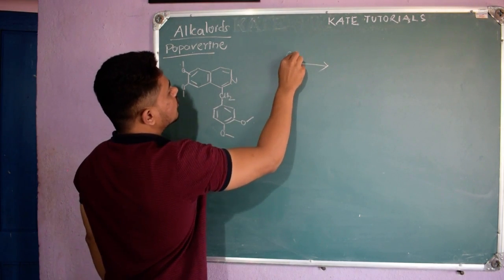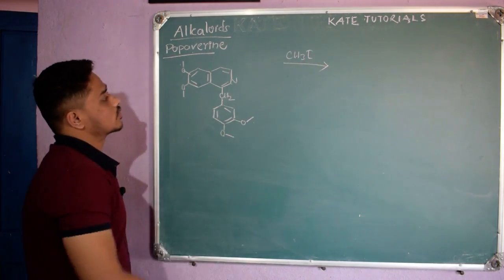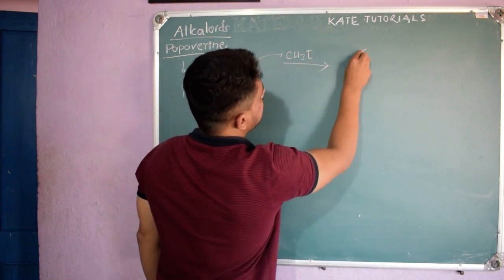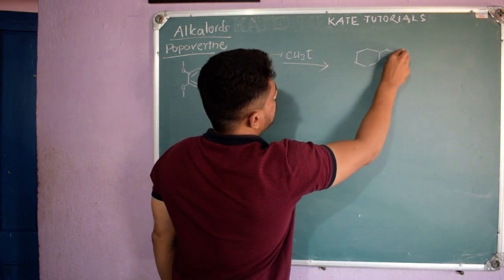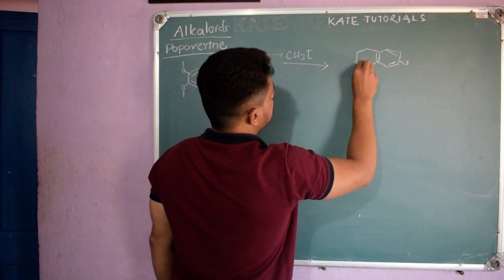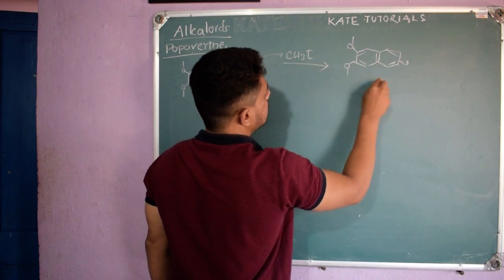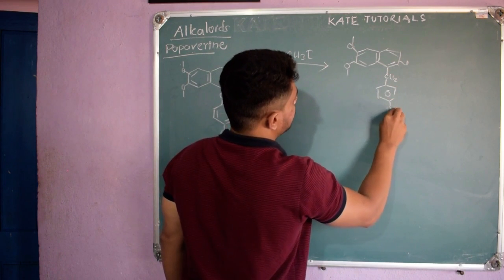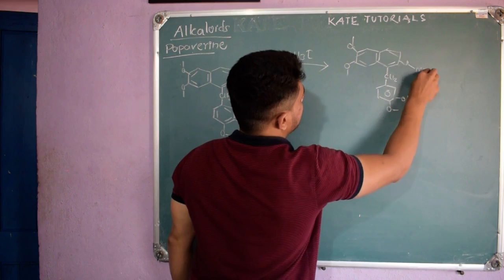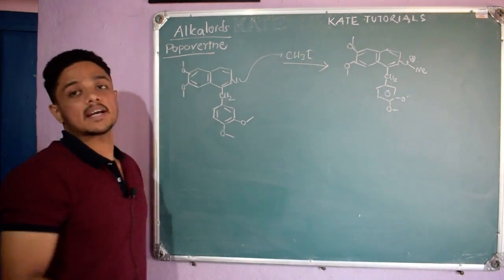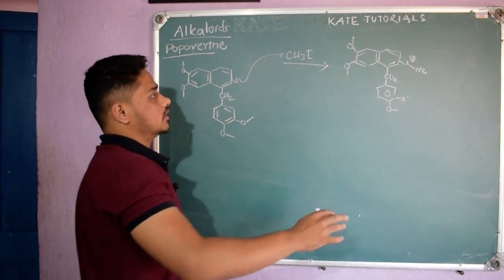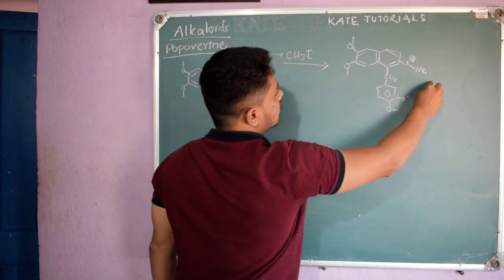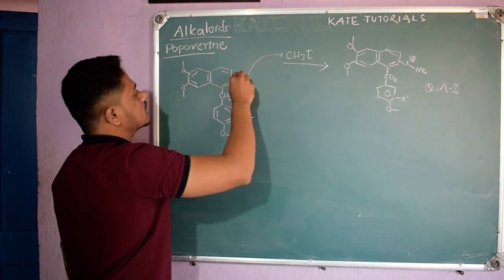First, when we add CH₃I to papaverine, this nitrogen is present and its lone pairs go out of plane in an SN2 reaction, giving this product. The product has OMe groups, a CH₂ group, a benzene ring, OMe and OMe, and a methyl group — the nitrogen gets a positive charge. Since it forms a quaternary ammonium salt, we call it a quaternary ammonium salt.